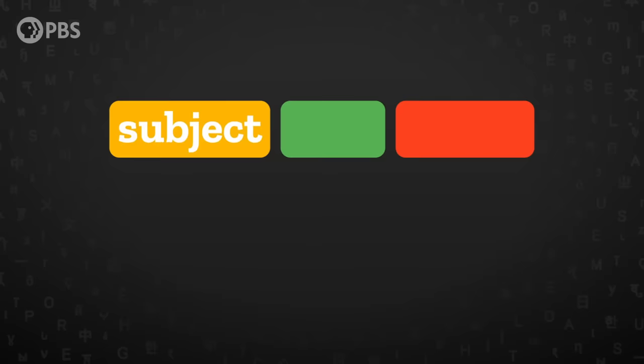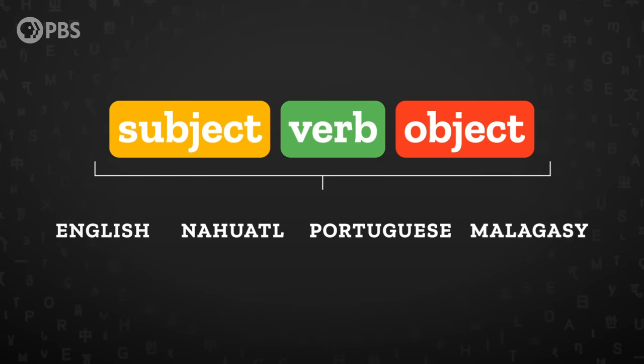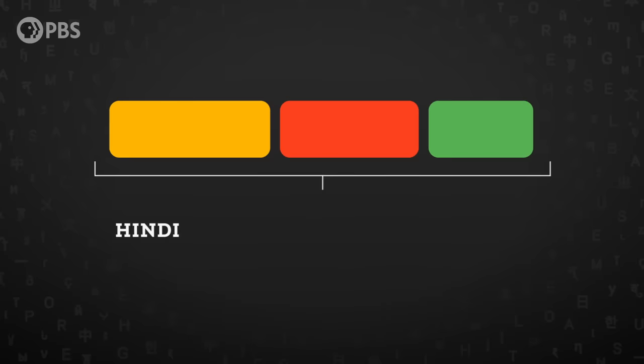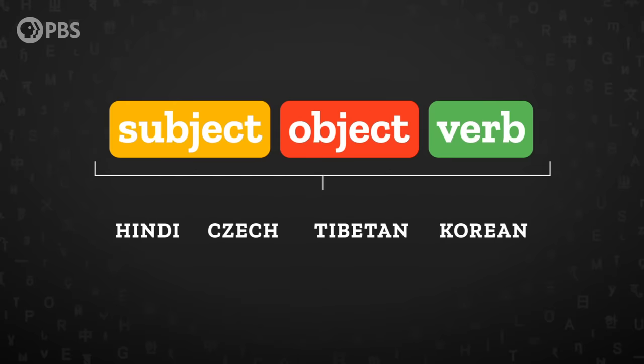One way of expressing relationships between words is to put the words in a consistent order, to tell us who did what to whom. For example, we can say the subject first, then the verb, then the object. English uses this word order, as do many other languages like Nahuatl from Mexico, Portuguese, and Malagasy from Madagascar. The word order doesn't have to go subject, verb, object — any order will work as long as it's consistent within a given language. For example, in Hindi the typical order is subject, object, verb. This is also very common across languages such as Czech, Tibetan, and Korean.